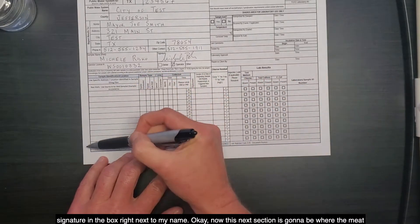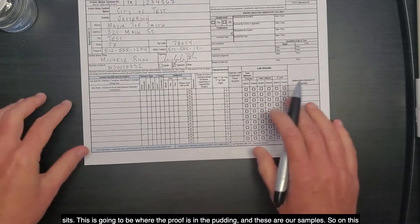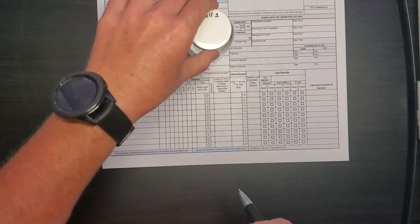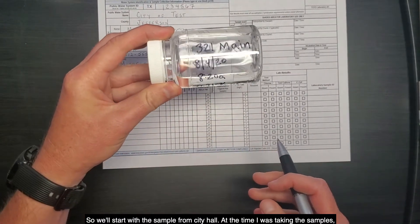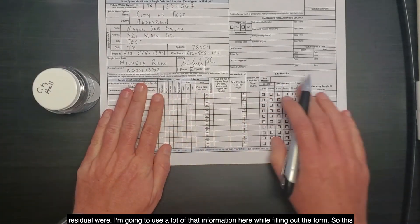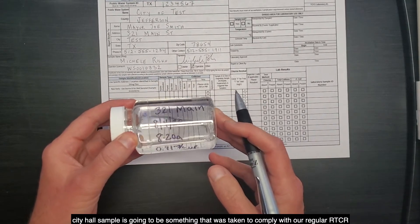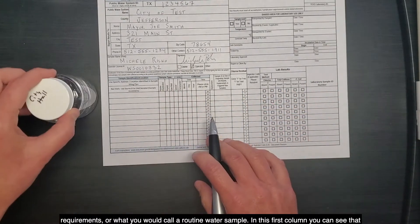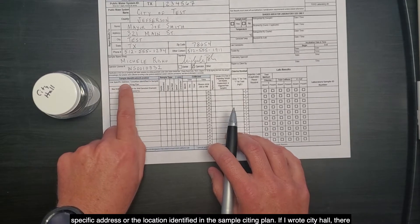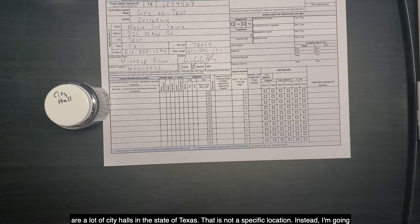Okay. Now this next section is going to be where the meat sits. This is going to be where the proof is in the pudding, and these are our samples. So, on this sampling event, I collected two samples. One sample from City Hall, and one sample from Well 1. So, we'll start with the sample from City Hall. At the time I was taking the samples, I marked the bare minimum requirements of where I took it, when I took it, and what my chlorine residual were. I'm going to use a lot of that information here while filling out the form. So, this City Hall sample is going to be something that was taken to comply with our regular RTCR requirements, or what you would call a routine water sample. In this first column, you can see that we're looking for the sample identification or the location. Here, it also instructs you to use the specific address or the location identified in the sample siting plan. If I wrote City Hall, there are a lot of City Halls in the state of Texas. That is not a specific location.